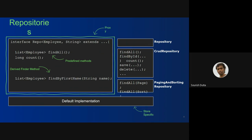You can have different query methods — like finding by first name. All the finder methods are there, and you can integrate other queries. Under CRUD repositories you have save, delete, count, find by ID, find all. You also have paging and sorting repository where you can pass a page or sort for pagination. This interface is basically a proxy where the actual store-specific implementation is provided.